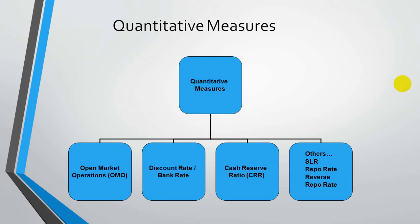Under the first category — quantitative measures — the basic forms are: first, open market operations; second, discount rate also known as bank rate; third, cash reserve ratio; and under others we have SLR, repo rate, and reverse repo rate.